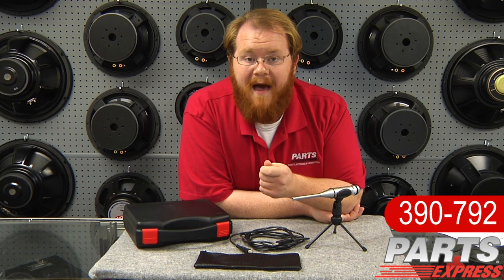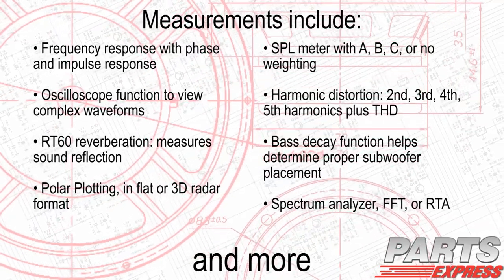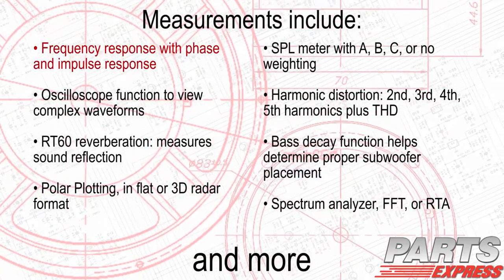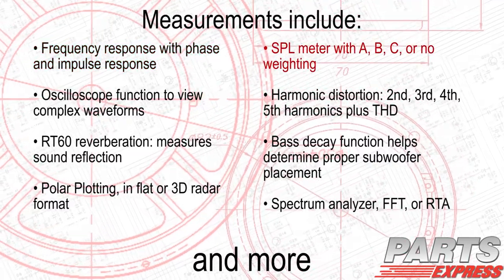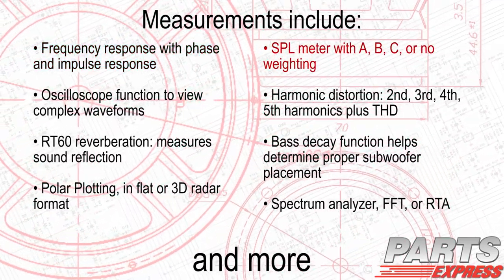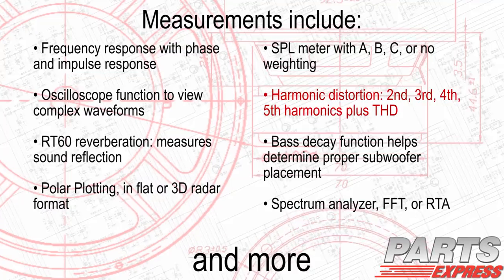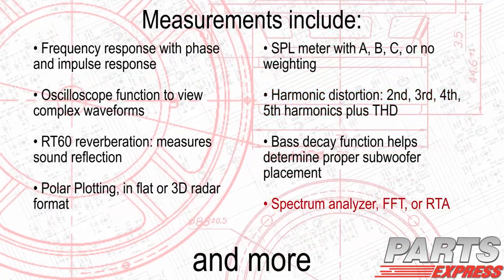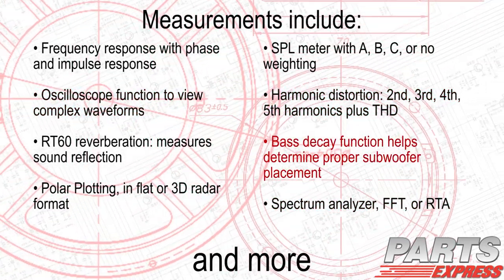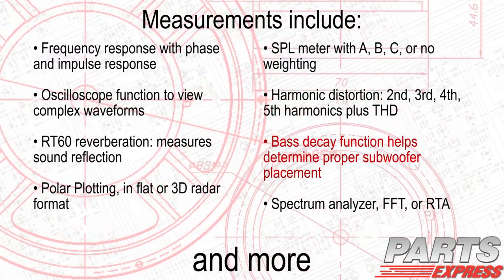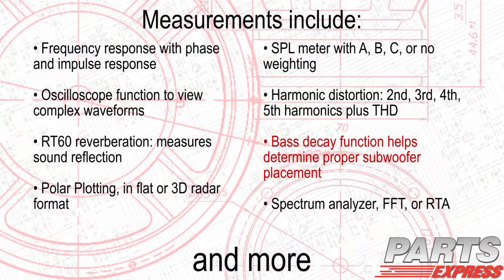The OmniMic is compact, portable, accurate, and affordable. It's perfect for tuning home theater systems or measuring room acoustics. Some of the measurements you can do with the OmniMic include frequency response with phase and impulse response, SPL meter with A, B, C, or no weighting, harmonic distortion analysis, spectrum analysis, an oscilloscope function to view complex waveforms, and a bass decay function that identifies room modes and helps determine proper subwoofer placement.